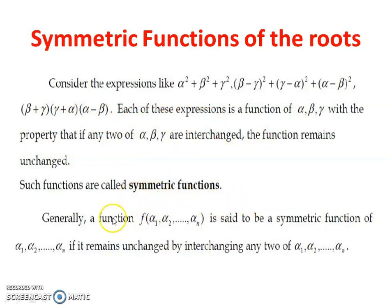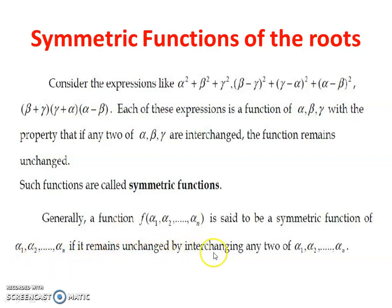Now let us look at the standard definition of the symmetric function. A function f(α₁, α₂, ..., αₙ) is said to be a symmetric function of α₁, α₂, ..., αₙ if it remains unchanged by interchanging any two of α₁, α₂, ..., αₙ. If we interchange any two of these n elements, the value of the function will not change. Such functions are called symmetric functions.